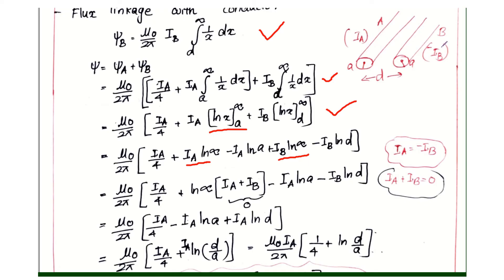IA and IB, IA is minus IB. The amount is the same. So IA is equal to minus IB, therefore IA plus IB is 0.